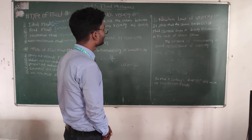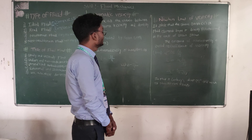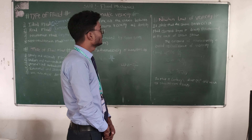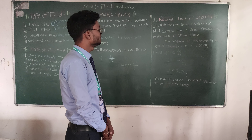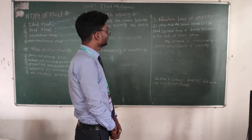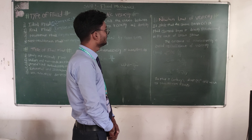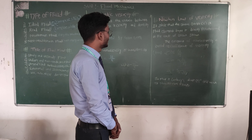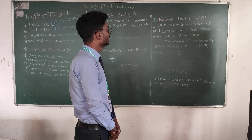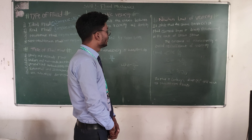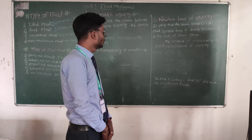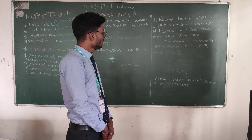The last one is Newton's law of viscosity. It states that the shear stress on a fluid element layer is directly proportional to the rate of shear strain. The constant of proportionality is called the coefficient of viscosity. Tau is directly proportional to du upon dy. Tau is equal to mu du upon dy. The fluids which obey this equation are known as Newtonian fluids.